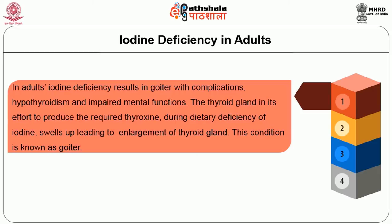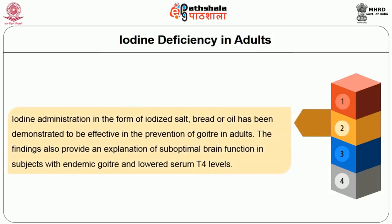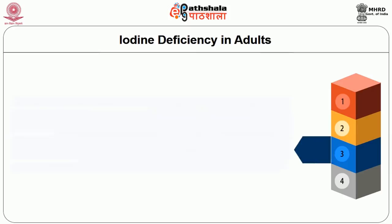The thyroid gland, in its effort to produce the required thyroxine during dietary deficiency of iodine, swells up, leading to enlargement of the thyroid gland — a condition known as goiter. Iodine administration in the form of iodized salt, bread or oil has been demonstrated to be effective in the prevention of goiter in adults. The relationship between T4 and T3 is influenced by the fact that selenium is a component of at least one of the enzymes mediating this conversion. Thus, a fall in selenium status reduces T3 synthesis and may increase the adverse consequences of iodine deficiency.